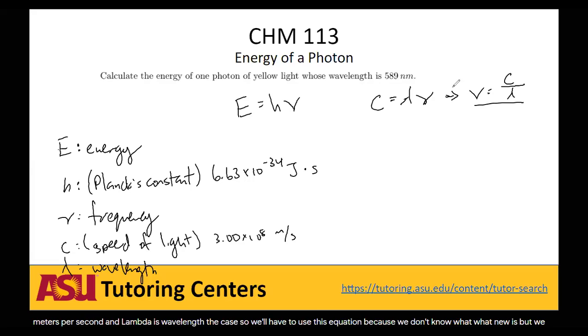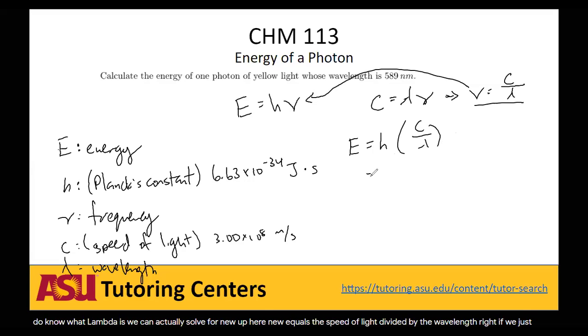And then we can take that value and substitute it in here to get energy is Planck's constant times c over lambda. So hc over lambda.